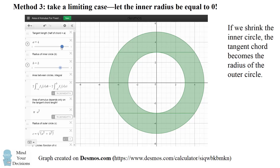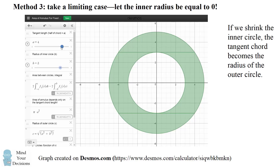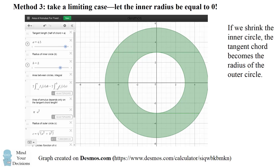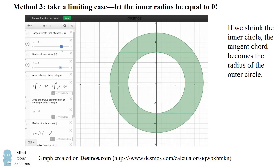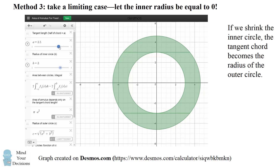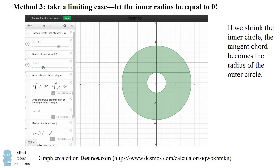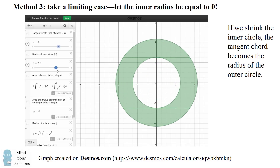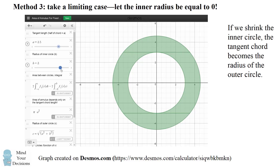The area of the annulus equals π times a squared, which equals 16π, approximately 50.265 as shown in the Desmos interactive. You can also play around with the length of the tangent chord: increasing it increases the area between the two circles, and decreasing it decreases the area. Both methods of calculation give exactly the same numerical answer. For any particular value of the tangent chord, the area of the green ring is unchanged — it only depends on the parameter a.